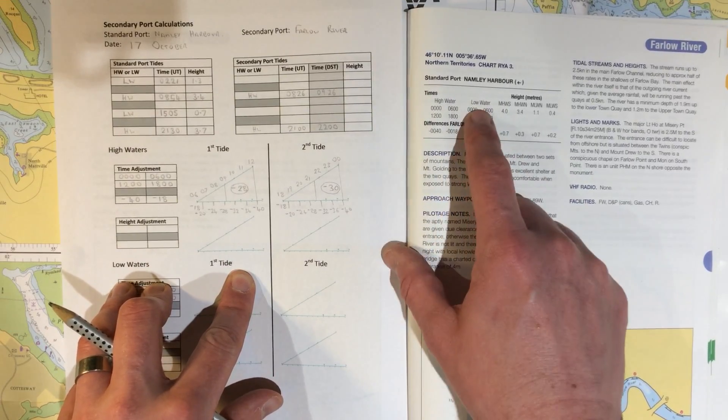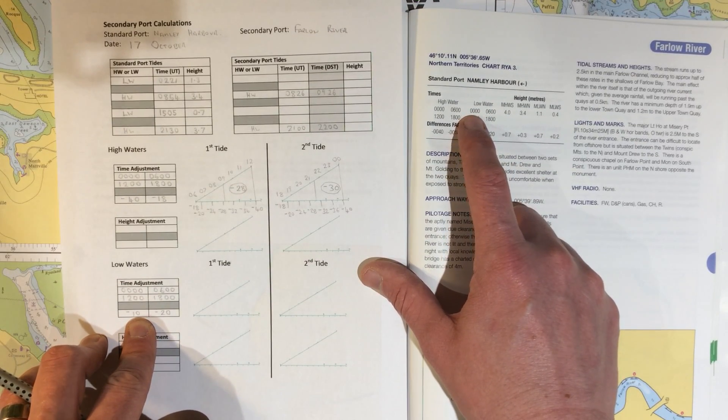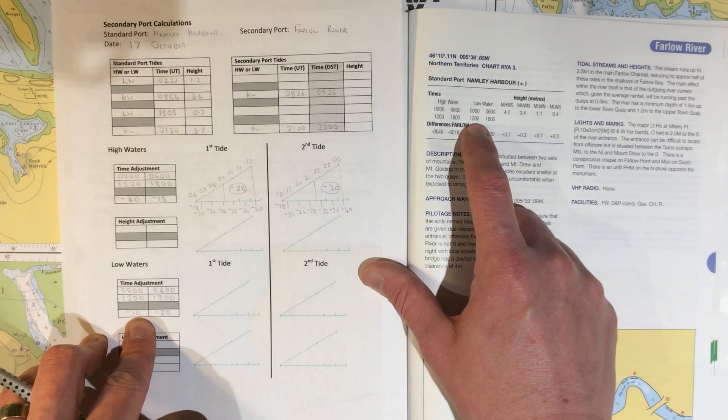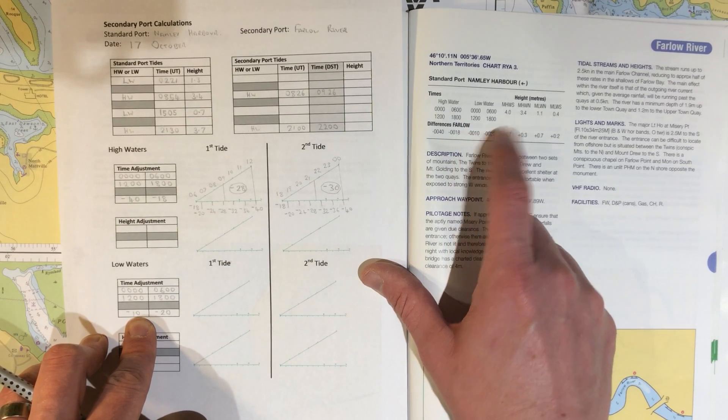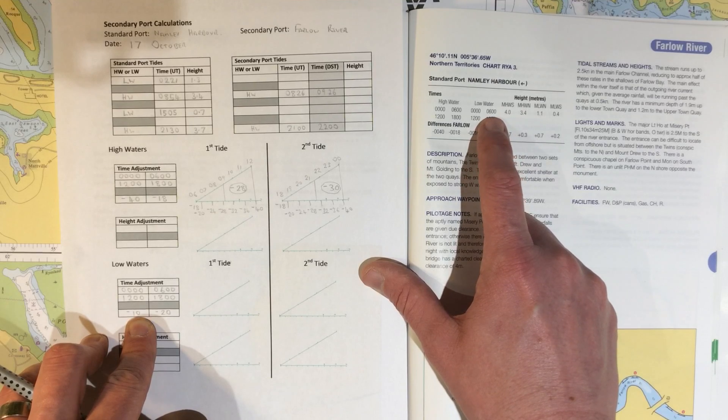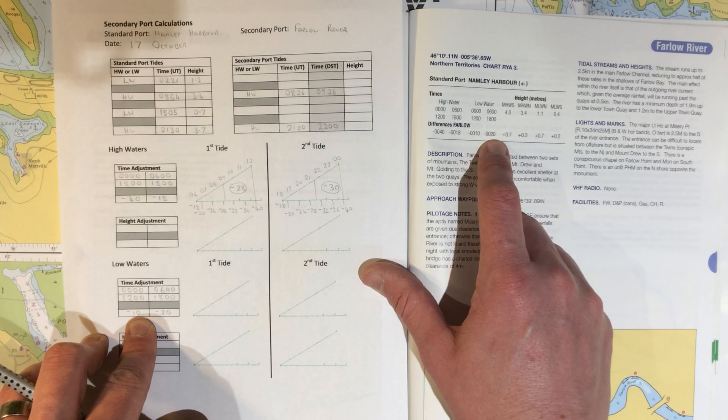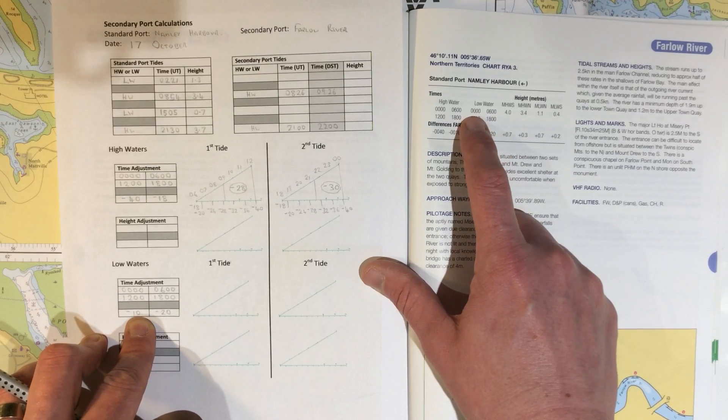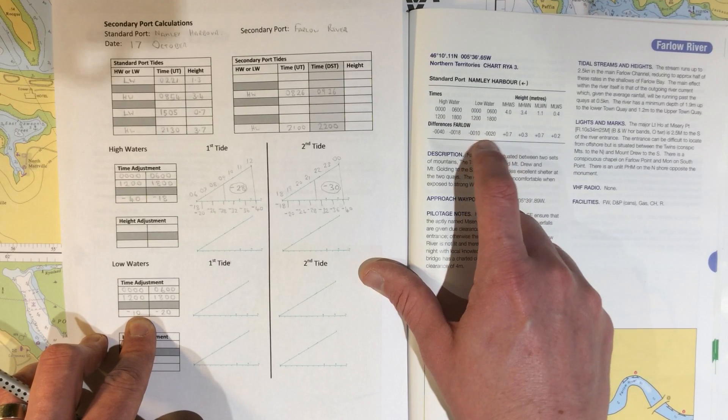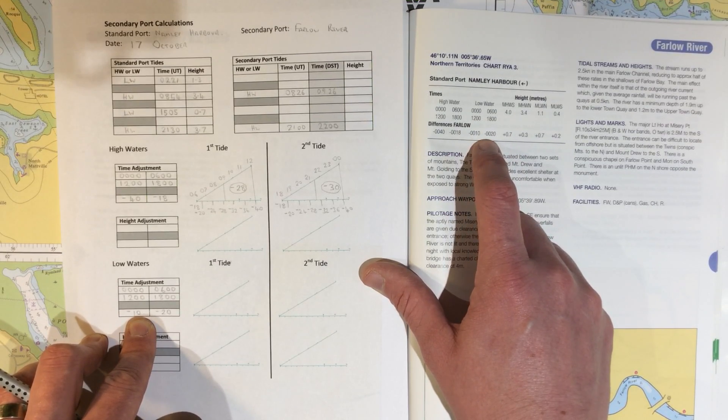The first thing I would recommend you do here is copy those details down. So if low water is at midnight or midday, the difference is you subtract 10 minutes. If the low water is at 6 in the morning or 6 in the evening, then the difference is you take away 20 minutes. If the times happen to fall exactly or close to these times, that's nice and easy. However, in most cases it's going to be somewhere in between.